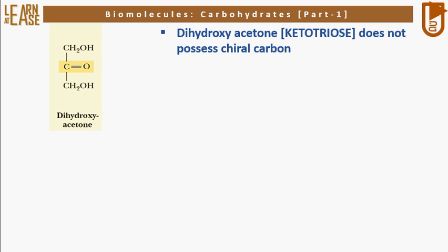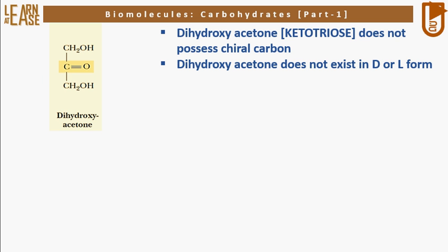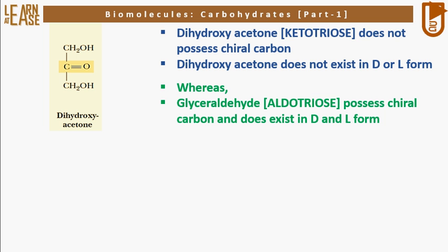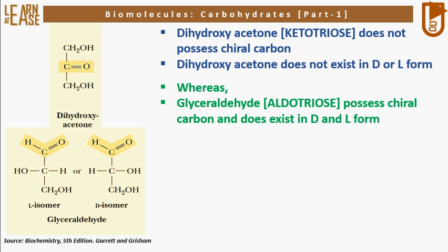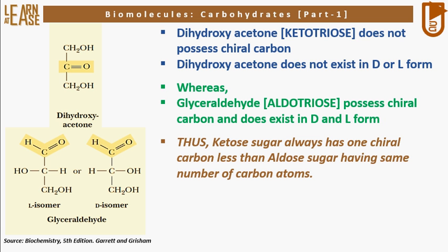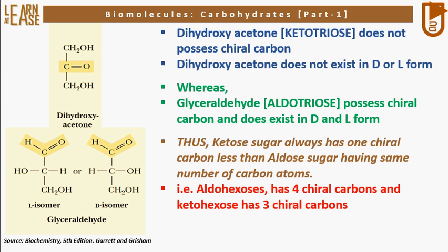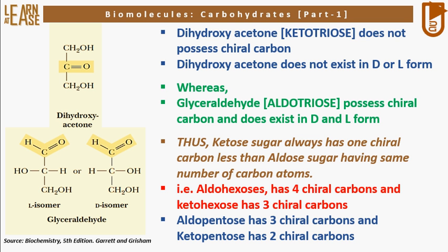Dihydroxyacetone, a ketotriose, does not possess a chiral carbon and does not exist in D or L form, as shown in the image. Whereas glyceraldehyde, an aldotriose, possesses a chiral carbon and does exist in D and L form. Thus, a ketose sugar always has one chiral carbon less than an aldose sugar having the same number of carbon atoms. For example, aldohexoses have four chiral carbons and ketohexose has three. Similarly, aldopentose has three chiral carbons and ketopentose has two.